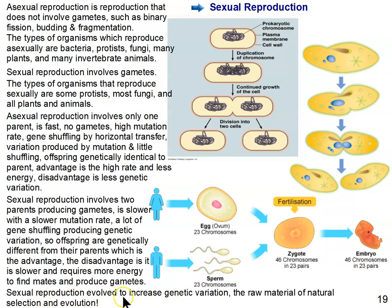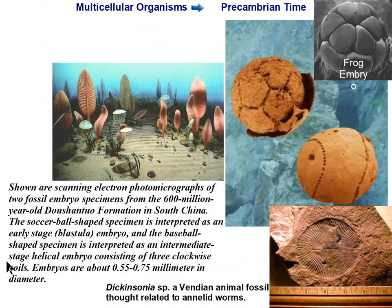Sexual reproduction evolved because of variation — it's all about the variation. Genetic variation is the raw material of natural selection and evolution. Organisms that reproduce sexually have an evolutionary advantage. So endosymbiosis, the evolution of eukaryotic cells, and the evolution of sexual reproduction set the stage for the evolution of more complex life.